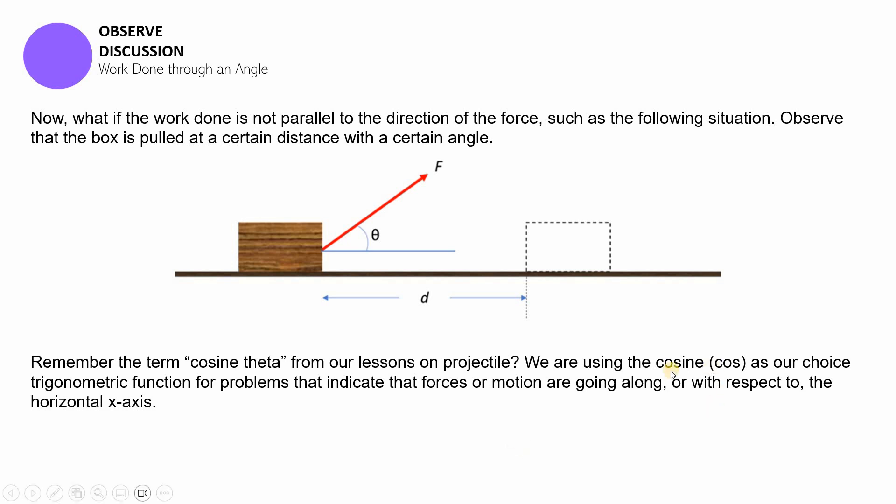You remember that in projectile motion, we were using cosine as our choice of trigonometric function for problems that indicate that forces or motion are going along or with respect to the horizontal axis. So if you remember projectile motion, kapag meron kinalaman sa horizontal x-axis, we are using cosine. And kapag naman may kinalaman sa vertical, we were often using sine. Now, you know about the formula. Let us now try and solve a problem related to it, shall we?